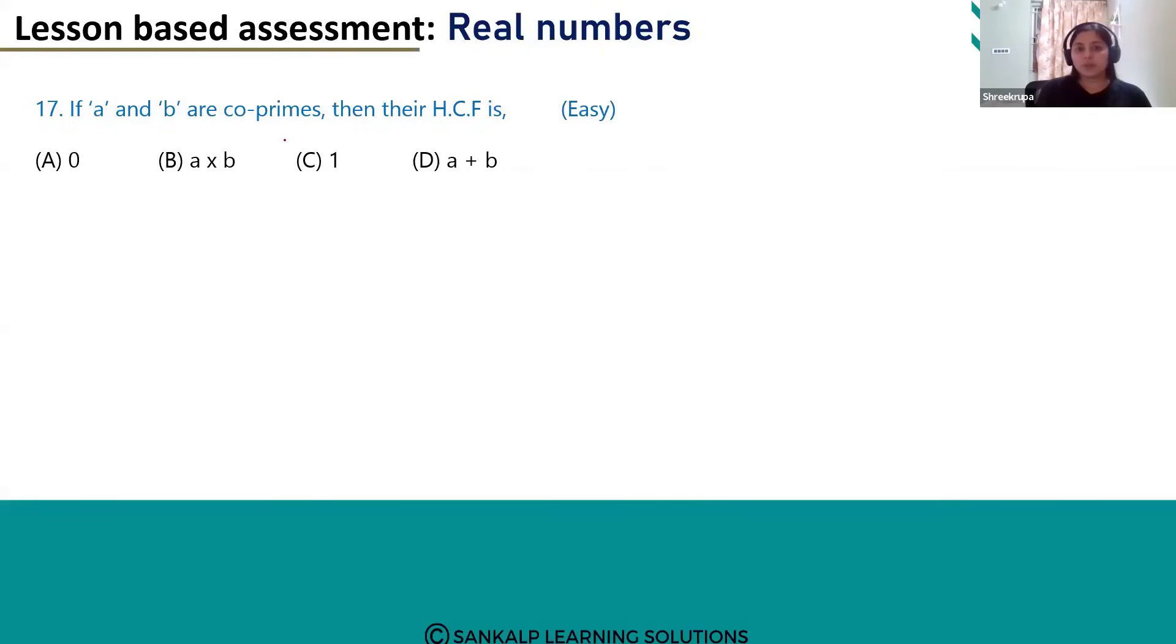What are coprime numbers? If two numbers have their HCF as 1, I mean common factor is 1 and they don't have any other common factors, then they are called coprimes, right?